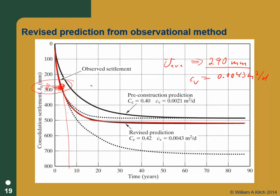Question: does this only work if it's normally consolidated? No — if it's overconsolidated, you now have more unknowns: C sub R, C sub C, and sigma prime sub C, so you'd have to make reasonable assumptions about some of those. With only C sub C and C sub V as unknowns, the two-measurement approach works. For overconsolidated soils, perhaps two different pore pressure measurements could help, but that would require further thought.